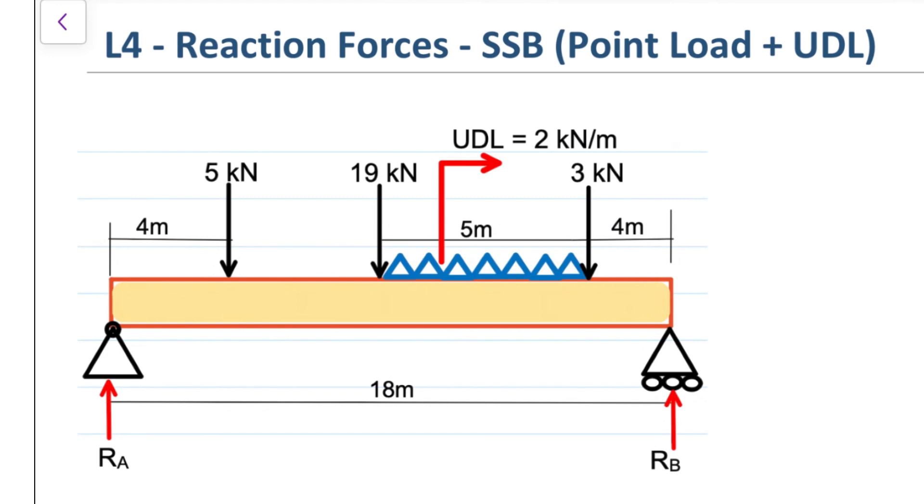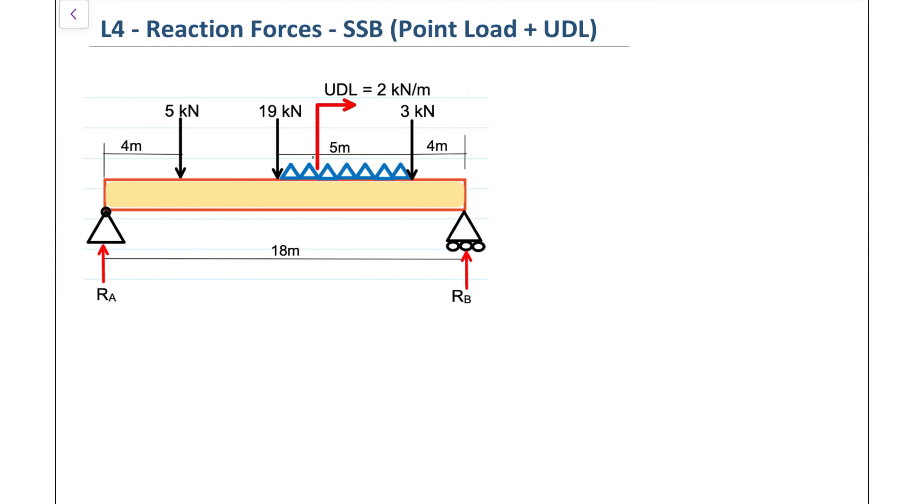The UDL is shown as 2 kilonewtons per meter and it spans across 5 meters. To convert the UDL to a point load, we're going to multiply 2 kilonewtons per meter by 5 meters, and that's going to give us the entire force for the UDL, which is 10 kilonewtons.